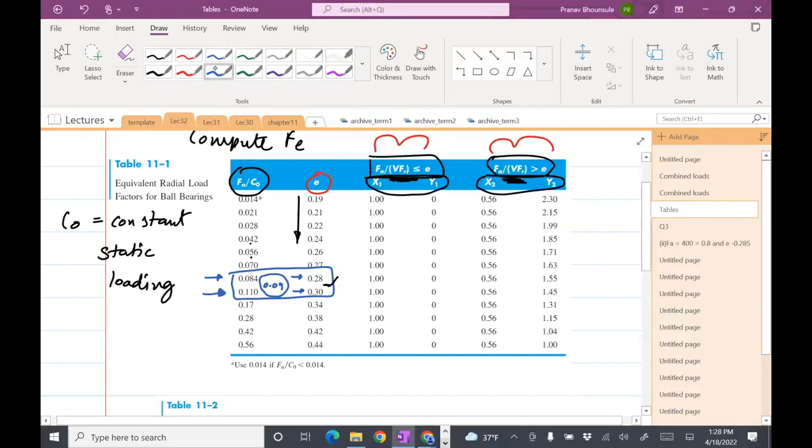Now, again, we have the same issue. There's X2. This X2 is the same, 0.56. So there's no problem with that. The problem is here where we have 1.55 for E equals 0.84, and it's 1.45 for E equals 0.11. But we want to figure out what is the value for FA divided by C0 0.09, which means we, again, have to interpolate. So we'll take this table now, these values, FA divided by C0, and take this thing, Y2, and then interpolate. We don't need to interpolate X2 because it's constant, it's 0.56.